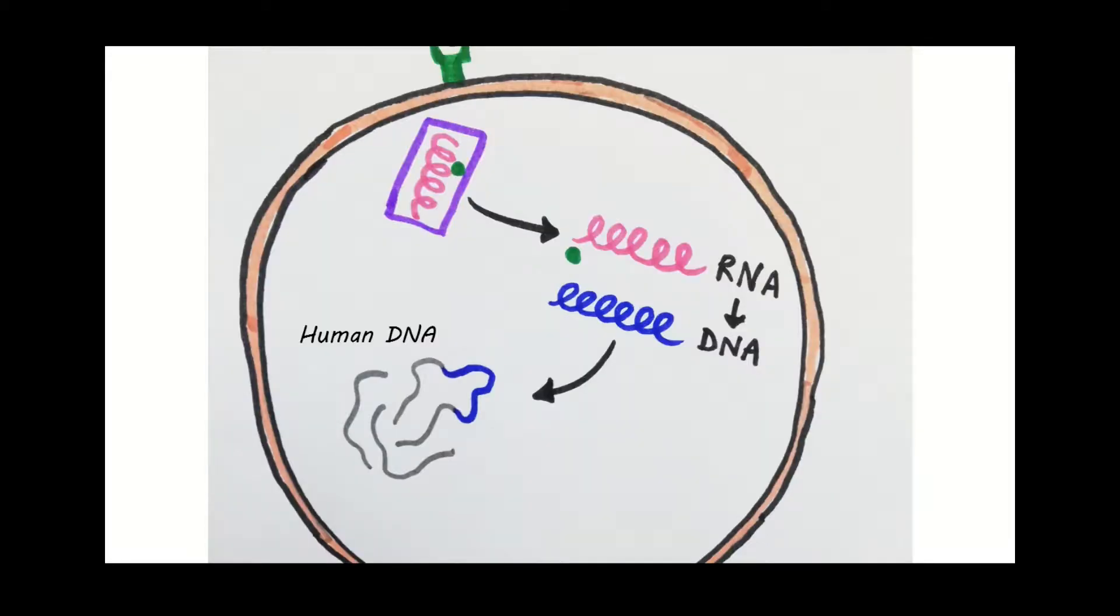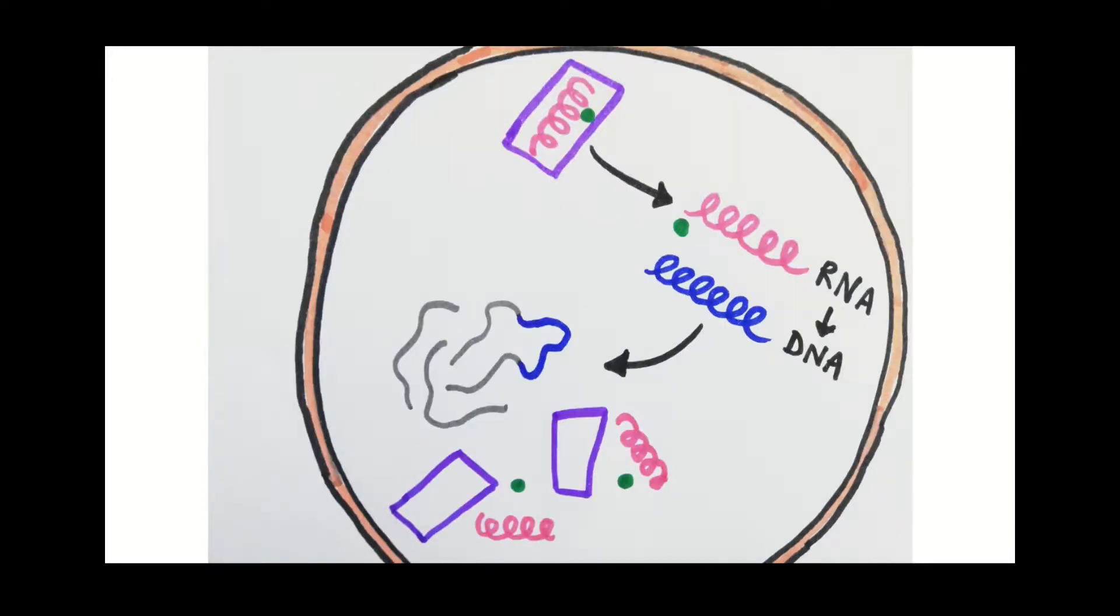Once the piece of DNA is made it is inserted into the human DNA and all the T cell can do is carry out the instructions. The instructions cause the T cell to start producing all the components needed to make the new HIV virus: the proteins for the capsid, more reverse transcriptase, more RNA and more attachment proteins.